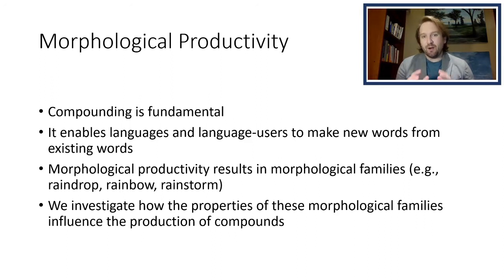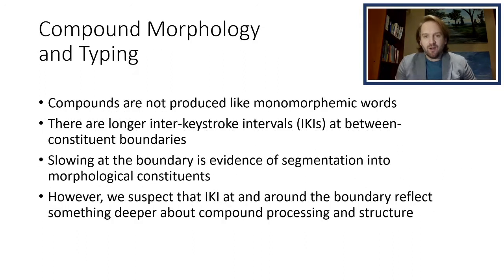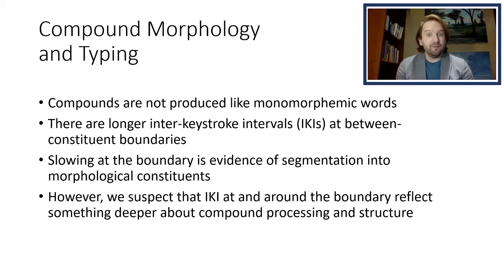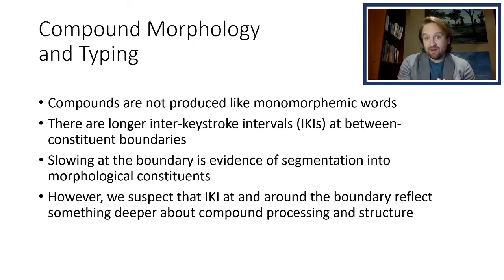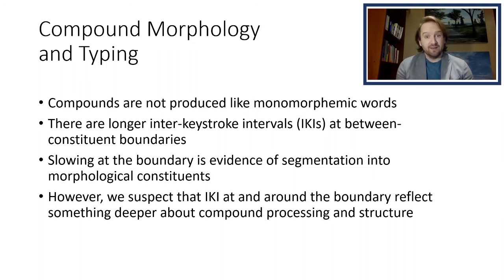We investigate how properties of these morphological families might influence how they are produced. Compounds are not produced like monomorphic words. If we were to compare the typing of raindrop with elephant, even though they have the same number of letters, we would see a very different typing pattern. Specifically, we would see longer inter-keystroke intervals at the between-constituent boundaries — so between the n in rain and the d in drop, you would see an elevated inter-keystroke interval pattern.